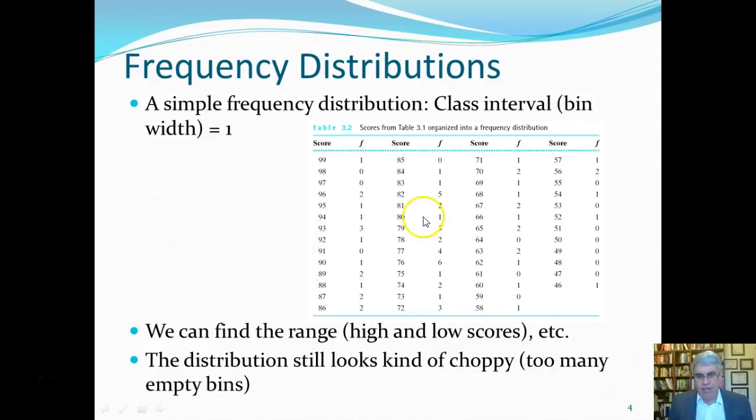We can see that looking around here, that seems to be where the biggest concentration is, upper 70s, maybe lower 80s. It's really easy to find the range. High score is 99, low score is 46. But we can't really tell if this is smooth or if it's choppy going up and down. We can't really tell just by looking at this because there's just so many empty bins and there's just so many numbers still.